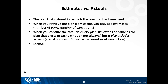Anytime I pull a plan from cache, it doesn't have actual values. When troubleshooting, someone might come to you saying a query is running slowly, and when you run it in Management Studio it works fine. The thing is, in some cases you could be getting a different plan than the other person. You need to pull the plan from cache for their query, then pull the actual plan you generate, and see if they're the same. Don't always assume the actual plan you get in Management Studio is the same as the plan that's in cache.